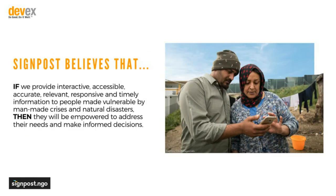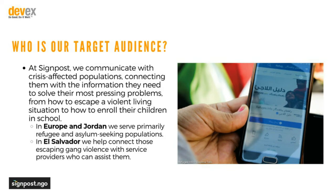Signpost believes that if we provide interactive, accessible, accurate, relevant, responsive, and timely information to people made vulnerable by man-made crises and natural disasters, then they will be empowered to address their needs and make informed decisions. Our ultimate goal is that people are empowered to be independent and make decisions for themselves. Our target audience is broad, but we are specific about how we reach people, ensuring information is relevant and delivered on the platforms they are using — Facebook Messenger, WhatsApp, a website, or in some cases analog.